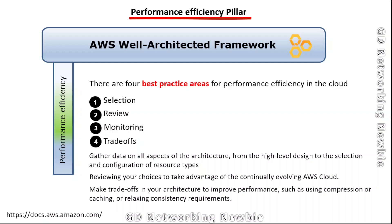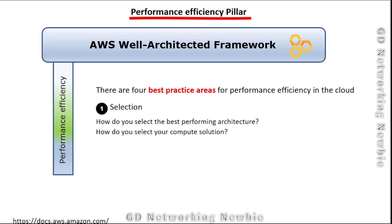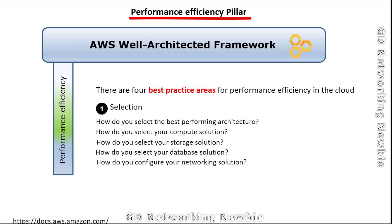We can make trade-offs in our architecture to improve performance, such as using compression, caching, or relaxing consistency requirements. The foundational question for selection is: how do you select the best performing architecture? This extends to: how do you select your compute solution, your storage solution, your database solution, and how do you configure your networking solution? Selection is a key component in deploying a cloud application.